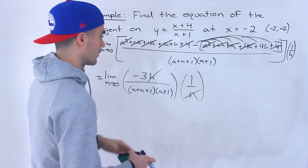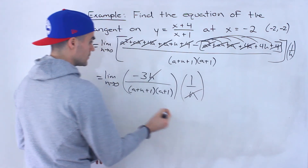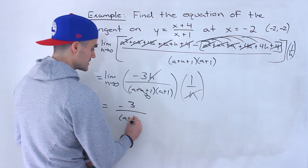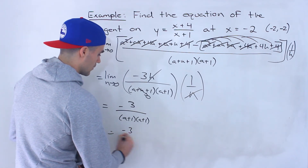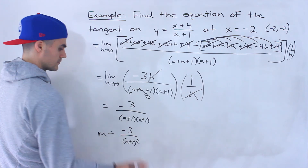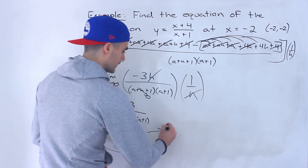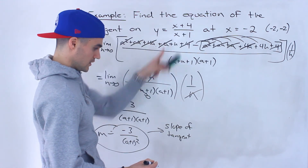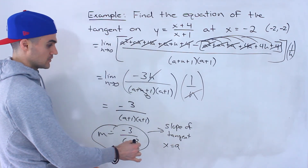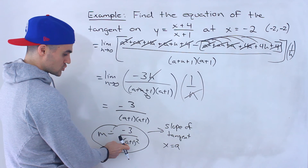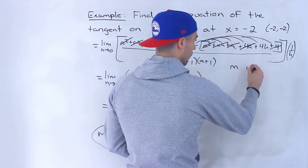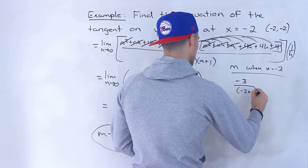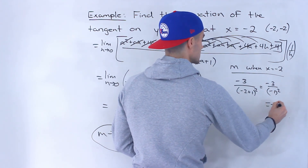After the h's cancel, we can plug in 0 for the remaining h, giving us negative 3 over (a + 1)(a + 1), which is negative 3 over (a + 1)². That's the slope of the tangent at any x value a. For x = -2, we plug in -2: negative 3 over (-2 + 1)² = negative 3 over (-1)² = negative 3.